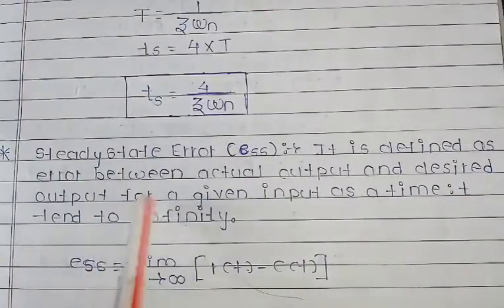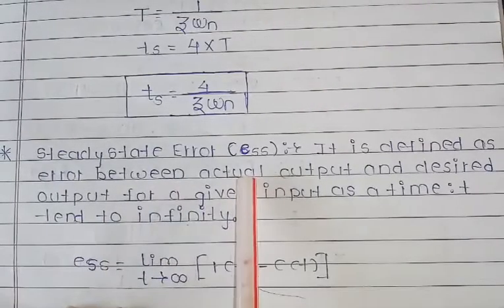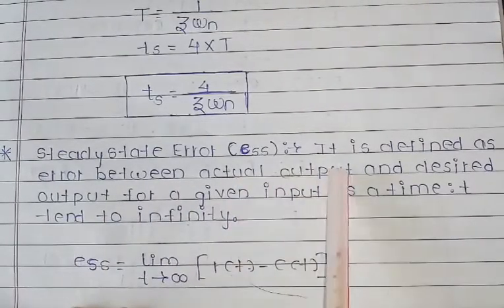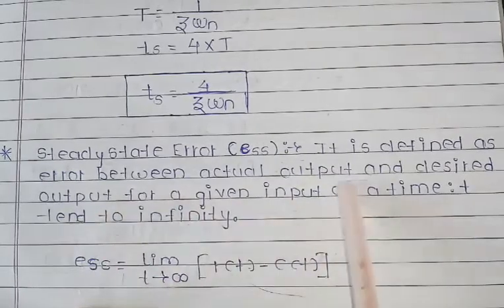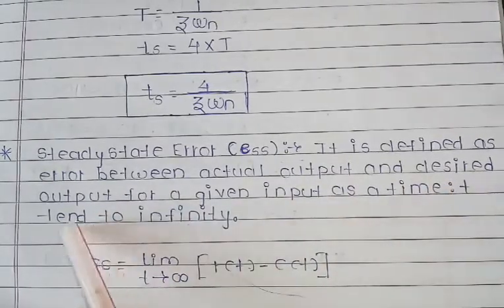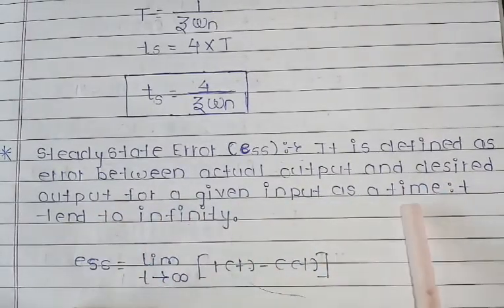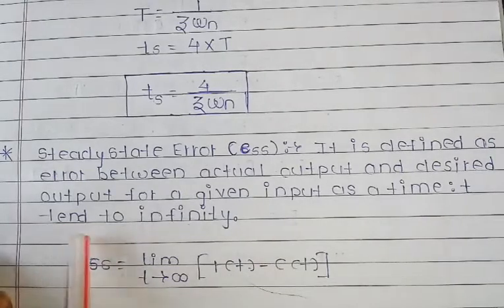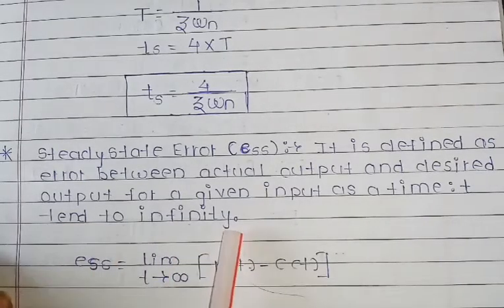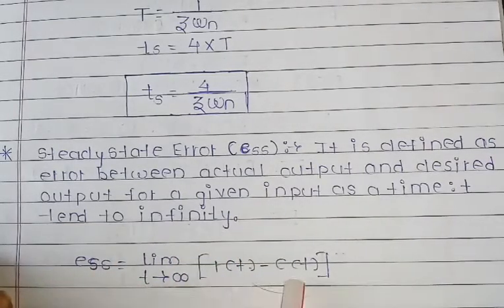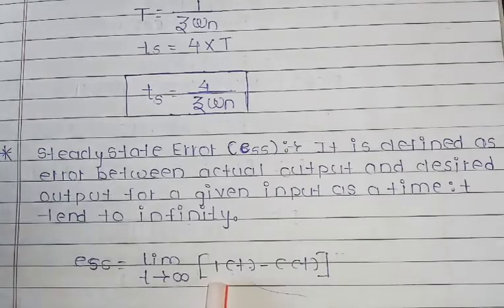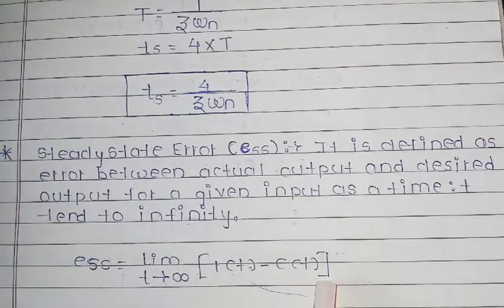Last definition: steady-state error, denoted as Ess. It is defined as the error between actual output and desired output for a given input as time tends to infinity. The formula: Ess equals limit as t tends to infinity of r(t) minus c(t).